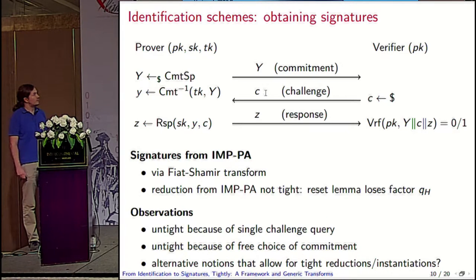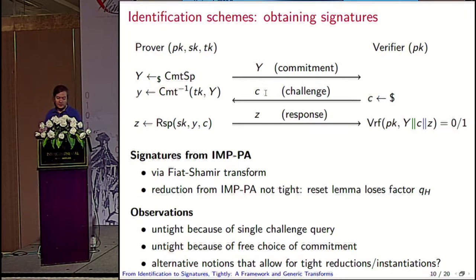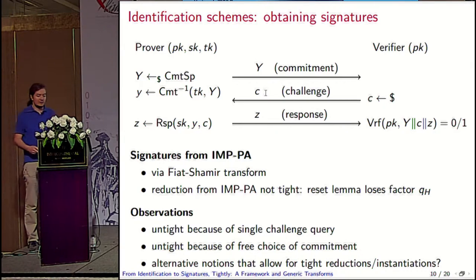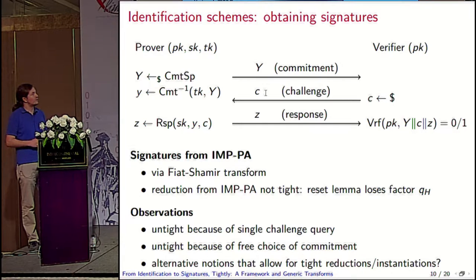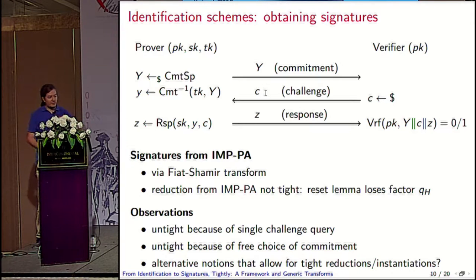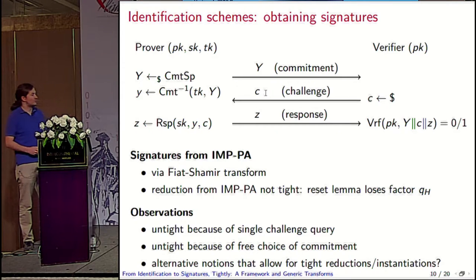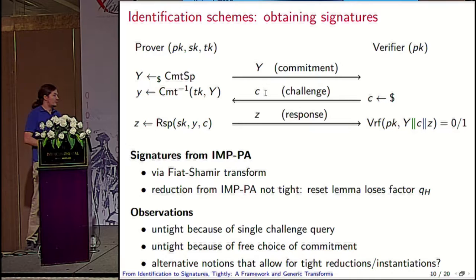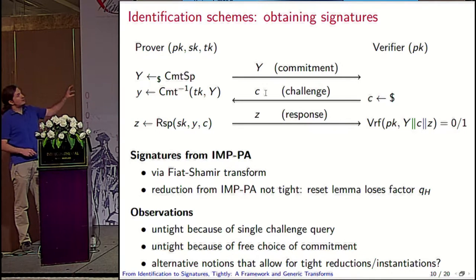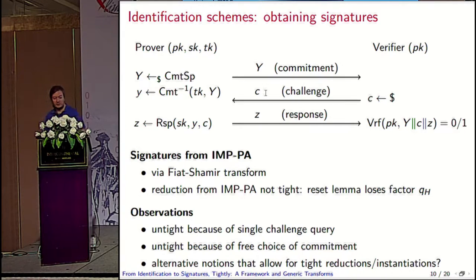How can we build signatures from this notion? We have the Fiat-Shamir transform. The reduction is not tight — it loses a big factor. Why is it not tight? A couple of reasons. The first is a technical one: the IMP notion allows only a single challenge query, which is not helpful. If you had multiple challenge queries, the situation would be better. The second is that the adversary has the free choice of the commitment. If you study the forking lemma, you have a structure where the adversary forges and you rewind it and run it a second time, but possibly it forges using a different commitment — and this is also a root for untightness. The question is: are there alternative security notions for identification schemes that would allow for tight reductions to signature schemes?